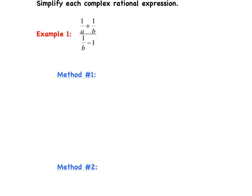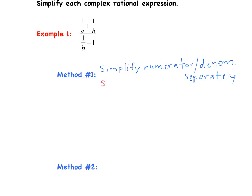So we have to treat it a little bit differently because of this plus and minus in the numerator and denominator. The first method is to simplify the numerator and denominator separately — we add or subtract to combine those terms. After we do that, it becomes a complex fraction like before, and we simplify the remaining complex fraction as we did before, like in the previous night's homework.